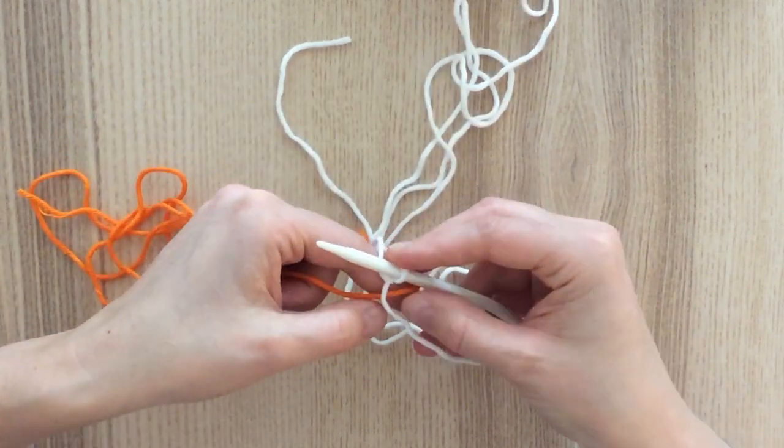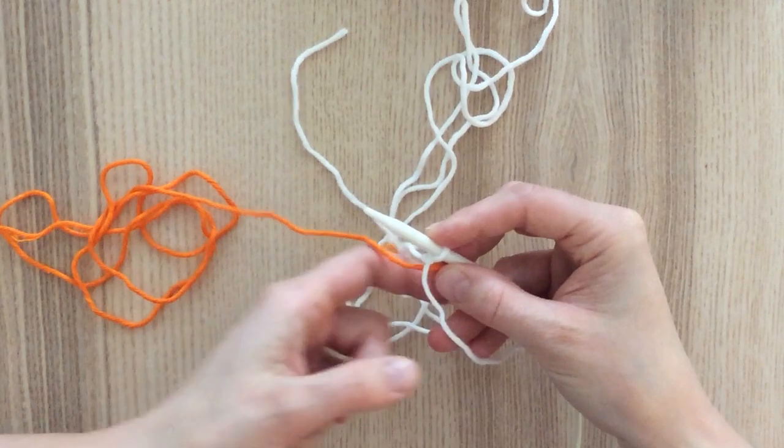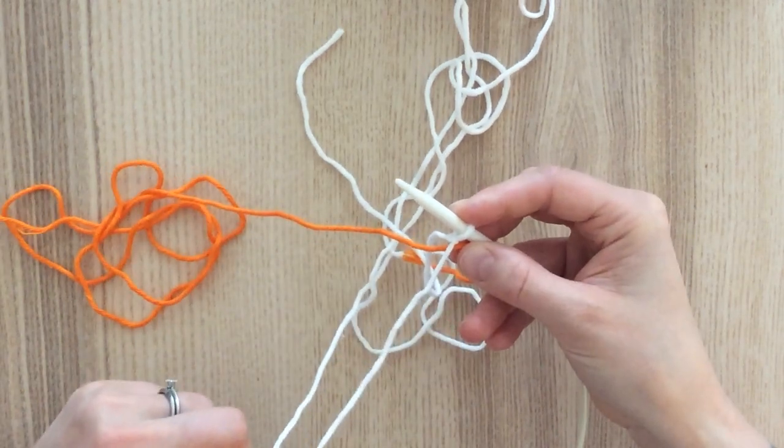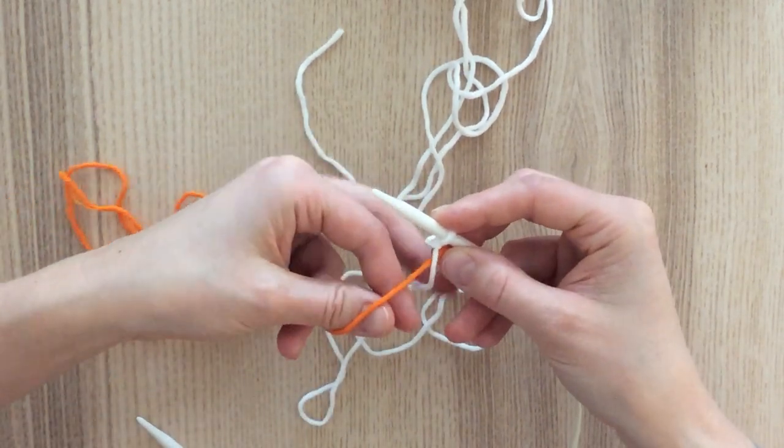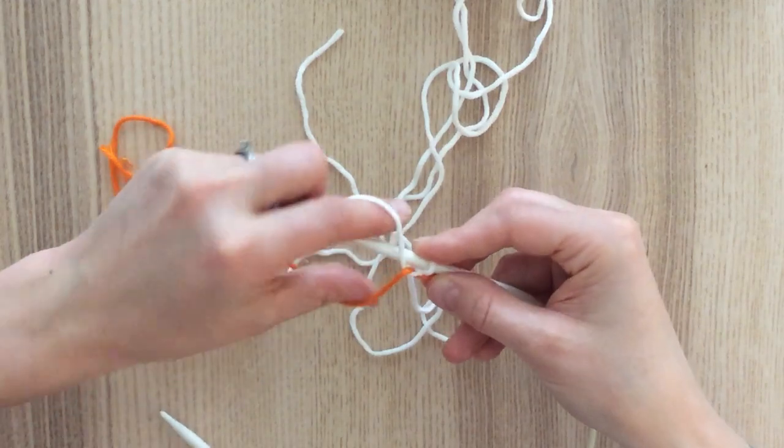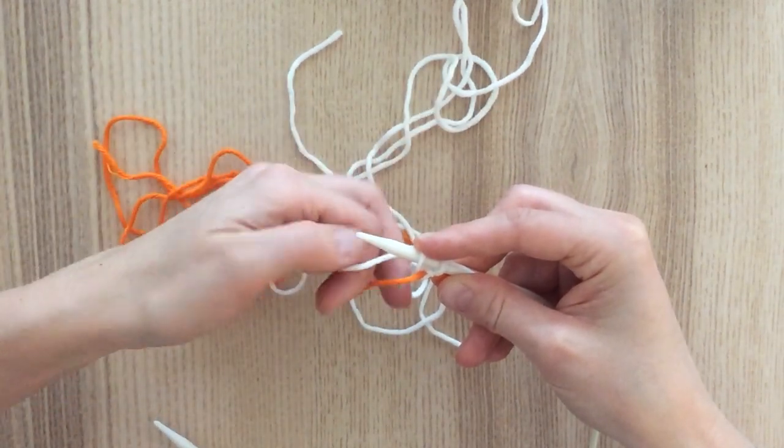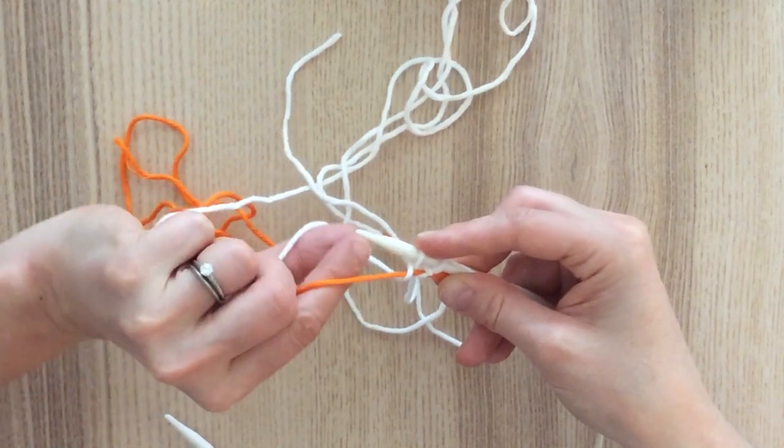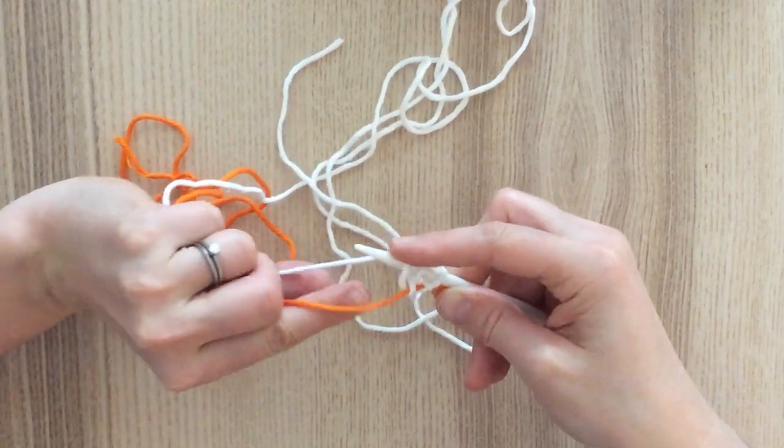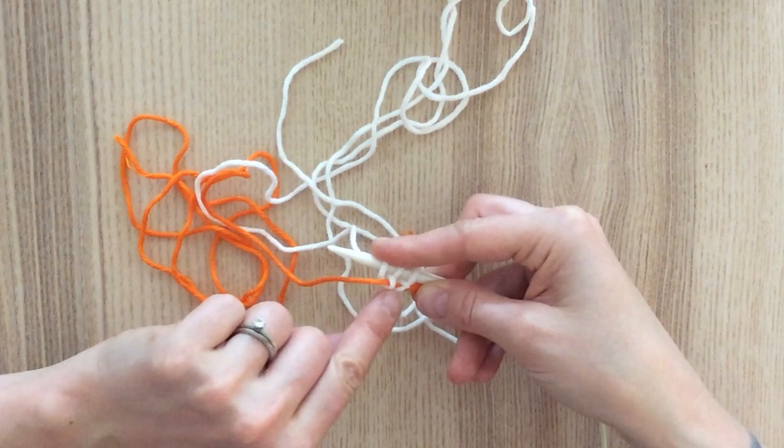You put your scrap yarn underneath it and then you take your yarn tail that's going to the ball over that scrap yarn and then over your needle. Again, over the scrap yarn, around it, and over your needle. As you can see, I'm leaving some space here.